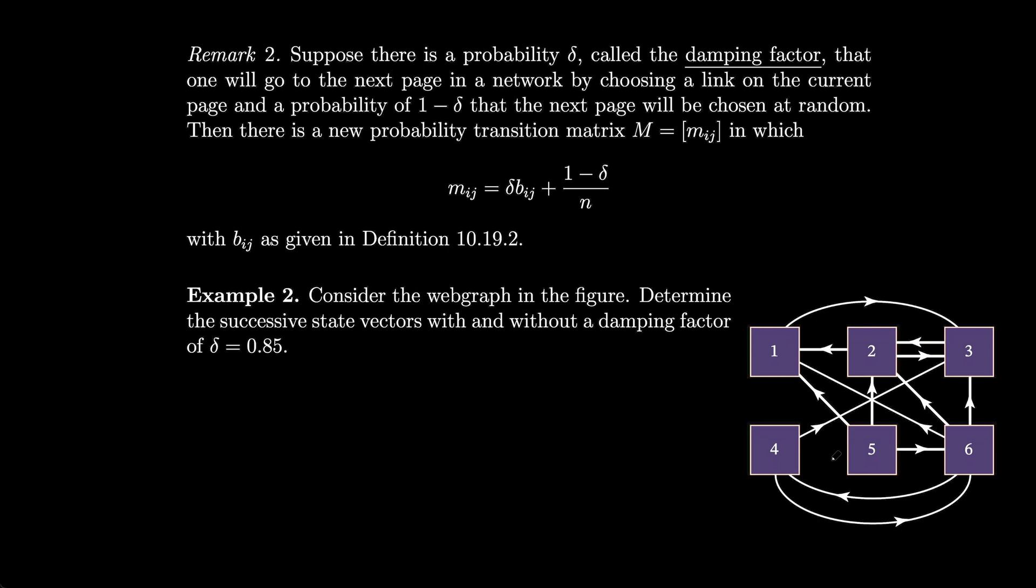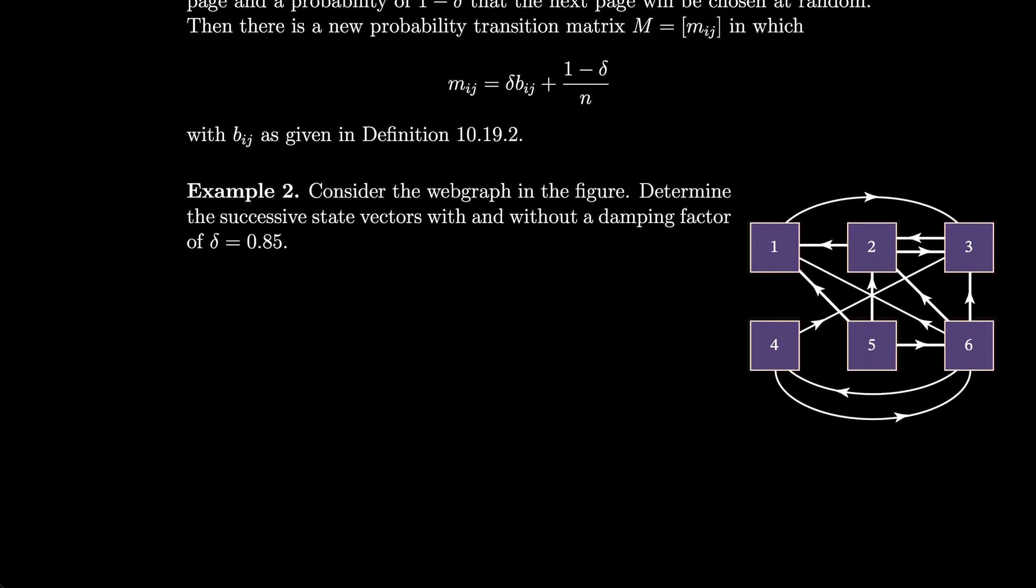Suppose that there is a probability delta called the damping factor, that one will go to the next page in a network by choosing a link on the current page, and a probability of one minus delta that the next page will be chosen at random. So instead of just going from one page to the next, we have now introduced a probability that you just randomly choose a page. Then there's a new probability matrix, M, in which we have each mij entry given by delta times the bij, plus one minus delta over n, with the bijs as given as before. So the idea here is that what if you started on a kind of a dead-end page, and then you couldn't go anywhere else, you would end up with steady state vectors over time that don't necessarily accurately reflect what they appear to be trending towards. So the damping factor can kind of compensate for that.